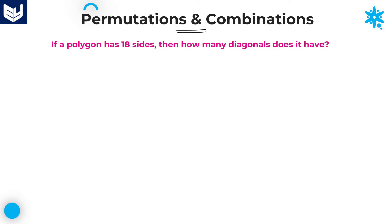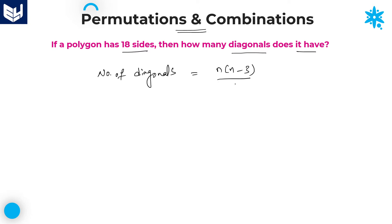If a polygon has 18 sides, then how many diagonals does it have? The number of diagonals of a polygon is given by a formula: number of diagonals is equal to n(n-3)/2.